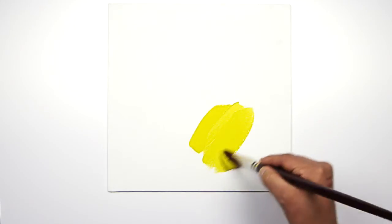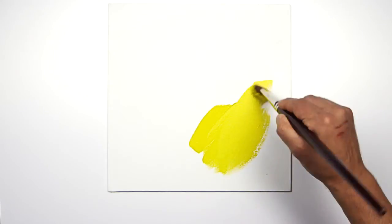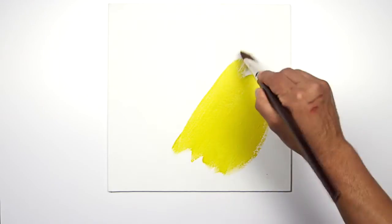Hard edge acrylic painting is a technique that began in the west coast of America in the late sixties. It's important to mix the paints to the right consistency, somewhere between single and double cream.